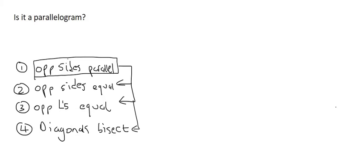But what if we start off with one of these ones, so for example what if we start off with number 4, would it also be true that we could find number 3, 2 and 1? Or do we always have to start off with the opposite sides being parallel? Well that's the point of this video.